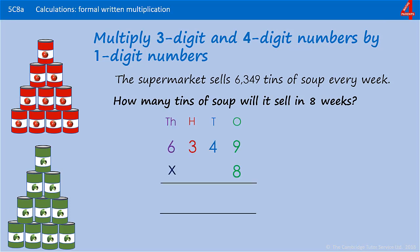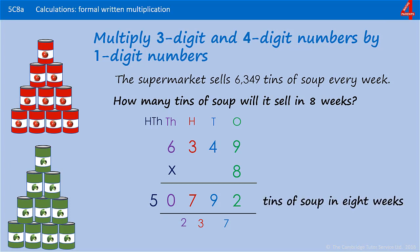The calculation is 6,349 multiplied by 8. 9 times 8 is 72. 4 times 8 is 32, add 7, that's 39. 3 times 8 is 24, add 3, that's 27. And 6 times 8 is 48, add 2, that's 50 — no other digits to multiply, so we put the whole of that 50 in. We now have a digit in the ten-thousands column. 50,792 tins of soup are sold from the supermarket in 8 weeks.